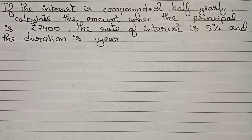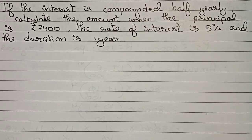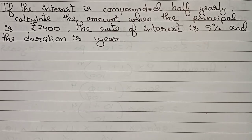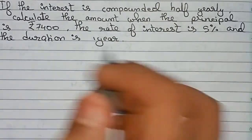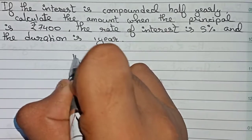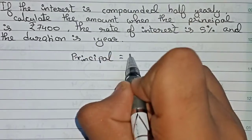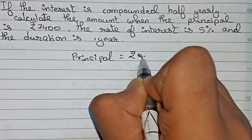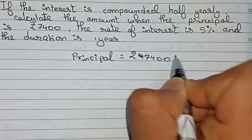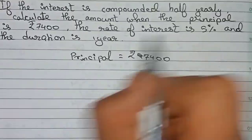This is a question of compound interest, so we will solve it using the compound interest formula. Let's start. First, write the information that is given: Principal is rupees 7400, the rate of interest is 5%.